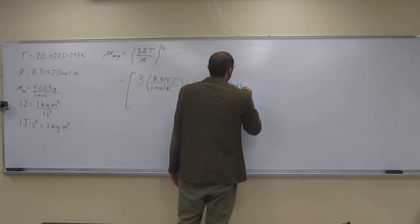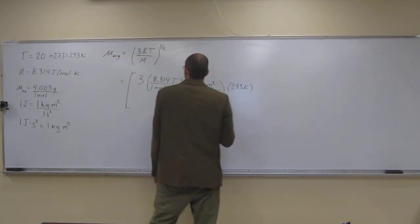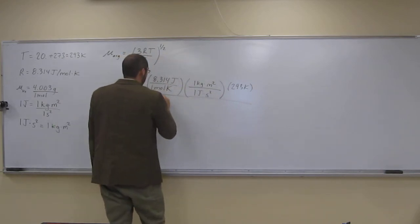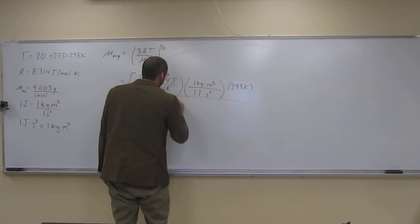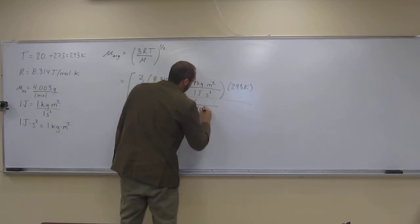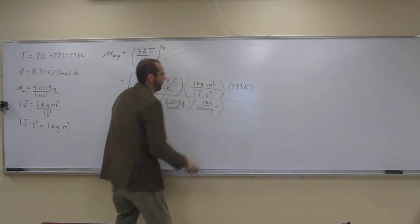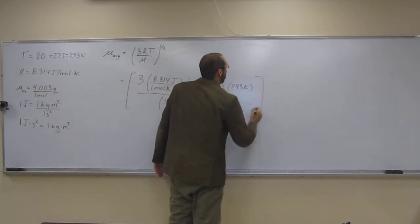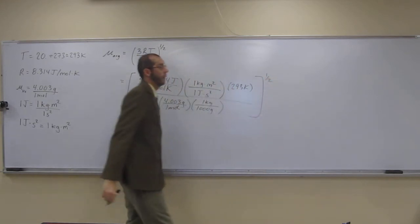T, 293 kelvin, all divided by, well, what did we say, 4.003 grams per 1 mole, 1,000 grams per kilo. And then we're going to take that all up to the one half.